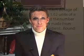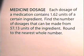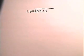Now let's look at an application problem involving division of decimals. Each dosage of a medication contains 1.62 units of a certain ingredient. Find the number of dosages that can be made from 57.13 units of the ingredient, round to the nearest whole number. I have gone ahead and set up this division for you. We will need to divide 57.13 by 1.62 in order to determine the number of dosages in the medication.